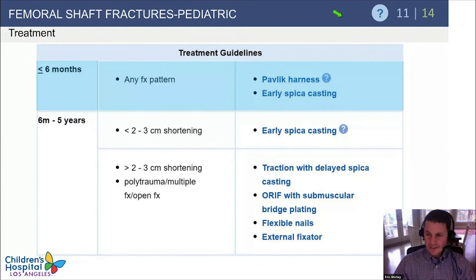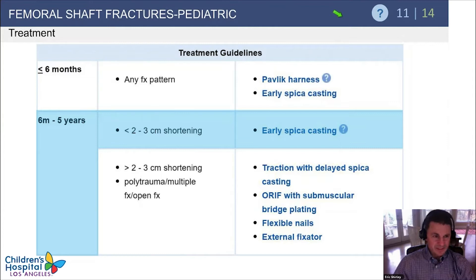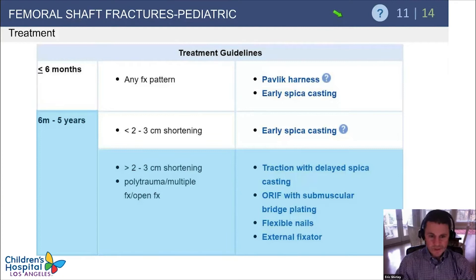Looking at the guidelines by patient age: less than 6 months of age with any fracture pattern, your options are Pavlik harness or early spica cast. Six months to five years with less than two centimeters of shortening, the best option is the early spica cast. In the same age group with more than two to three centimeters of shortening, you can think about additional options, though the AAOS guidelines found no data supporting a change in treatment plan for greater shortening.